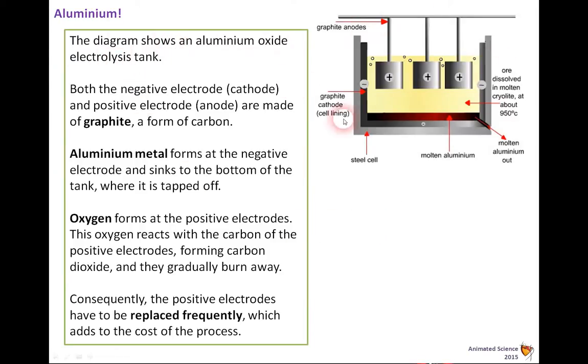So the diagram here shows an aluminium oxide electrolysis tank. Both the negative electrode, cathode, and the positive electrode, anode, are made of graphite. So you can see here the tank itself, the cell lining is graphite, which is negative. And here's the positive. And in the ore, dissolved in molten cryolite...